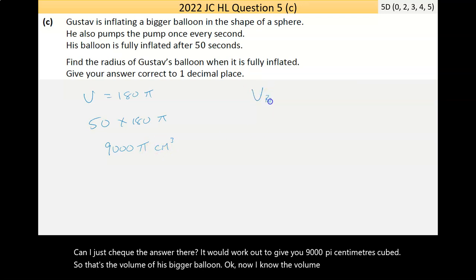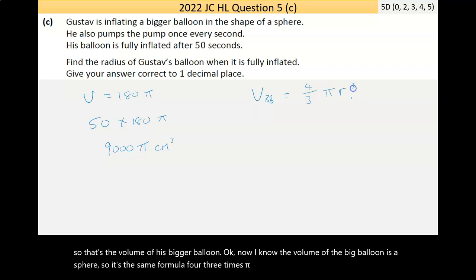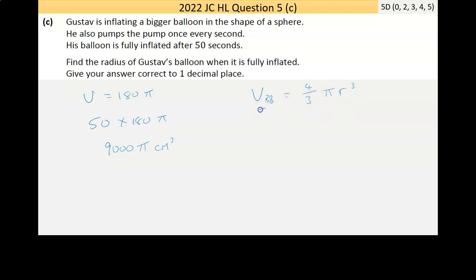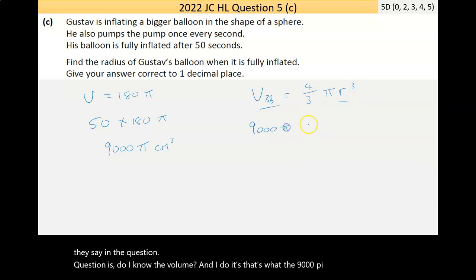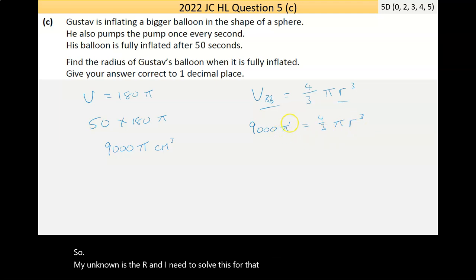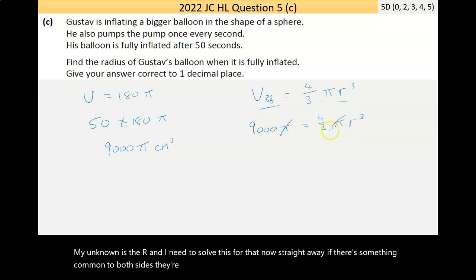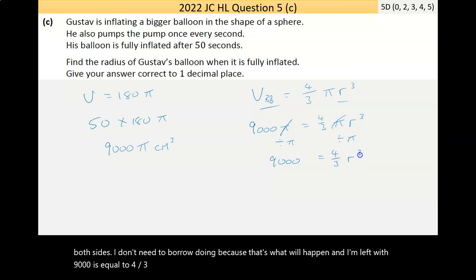I know the volume of the big balloon is a sphere, so it's the same formula: 4 over 3 times pi times r to the power of 3. There's two unknowns here, the volume and the radius. I'm looking for the radius. The question is, do I know the volume? And I do, that's what the 9000 pi is. My unknown is the r, and I need to solve this for that. Straight away, pi and pi will cancel. I'm dividing by pi both sides. I'm left with 9000 is equal to 4 over 3 r cubed.